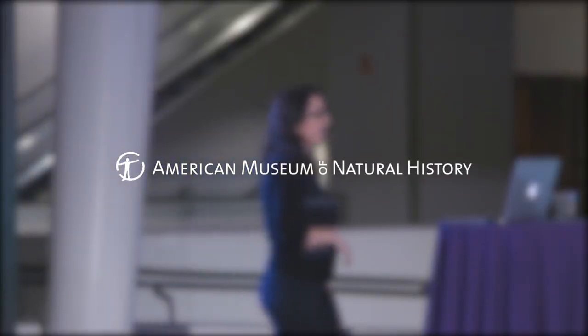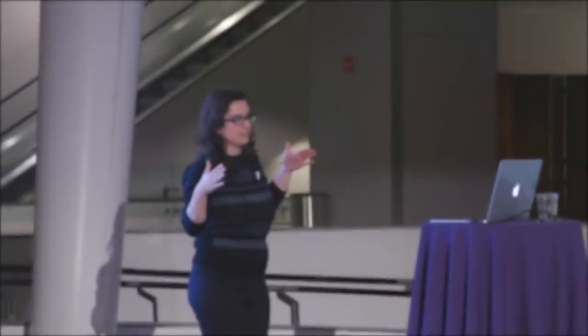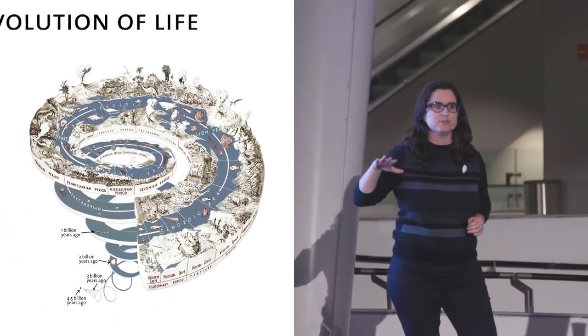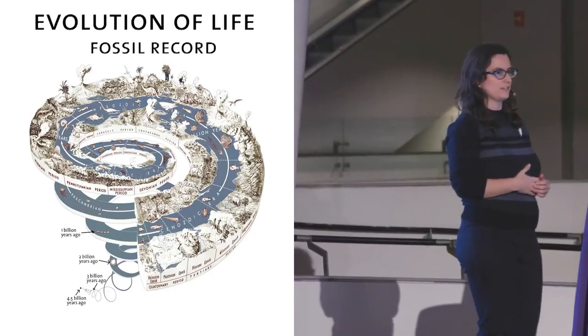The Earth is about four and a half billion years old, and for the first four billion years of Earth's history there really isn't a lot going on. That's what's shown here in this picture describing the evolution of life on Earth, at least as far as the fossil record is concerned.